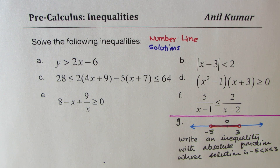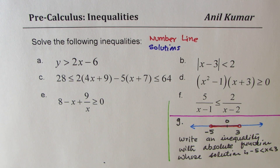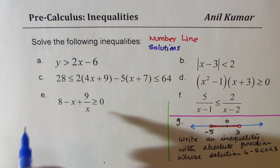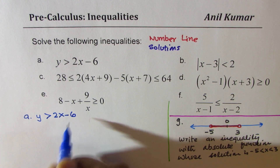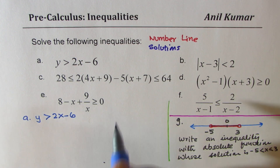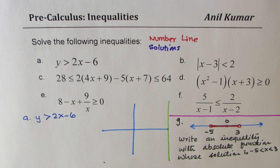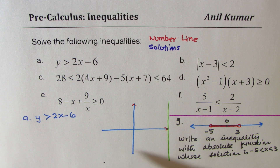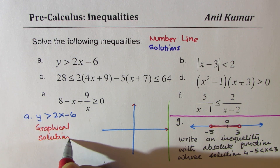Let's begin solving these inequalities. The first one is a straight line: y > 2x - 6. This is different from all the others because you have the term y, which doesn't appear in any other equation. Since there are two variables, we'll have a graphical solution — representing the solution on a graph.